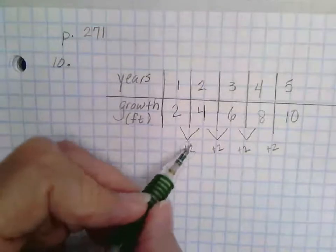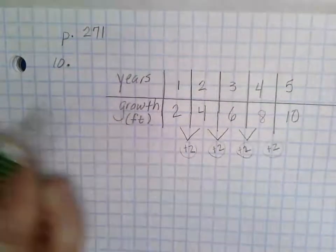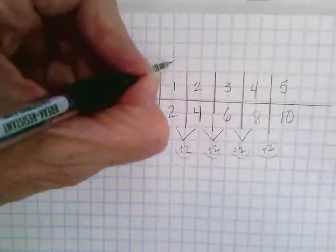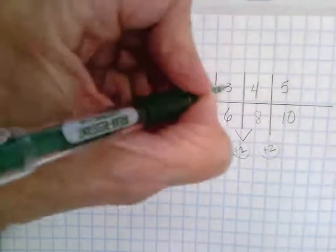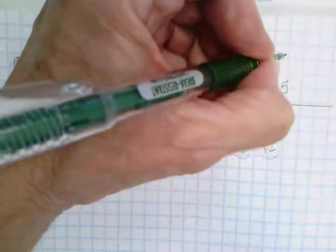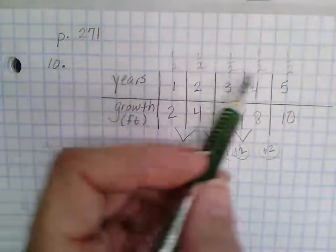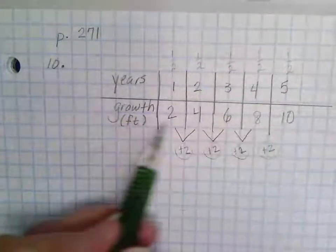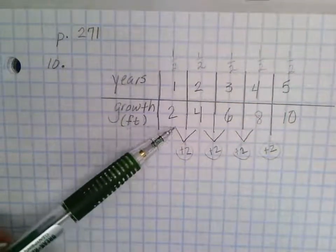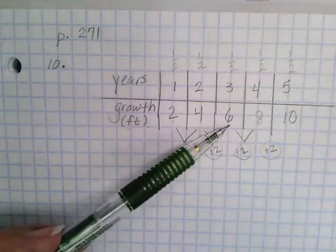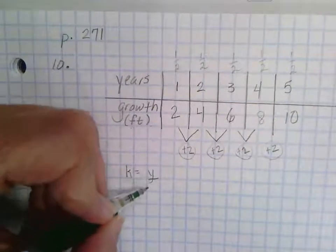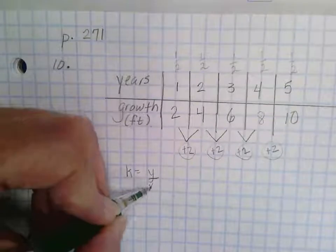We learned yesterday that this is the constant of proportionality. When these ratios simplify to the same ratio, three is half of six, four is half of eight, five is half of ten, when they simplify to the same ratio I have a proportional relationship and therefore I can find the constant of proportionality by looking at what is happening each time.